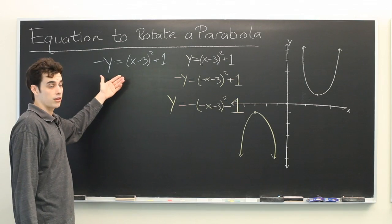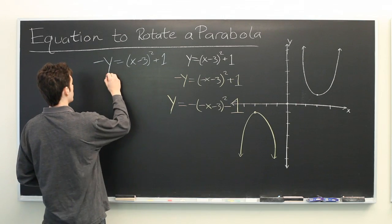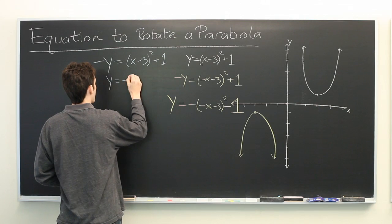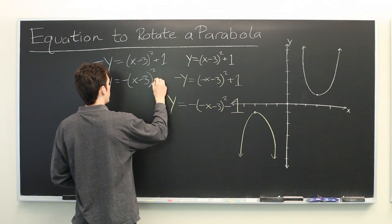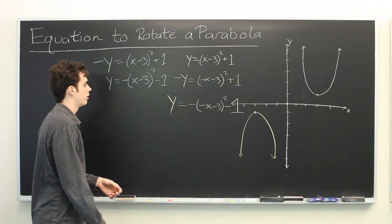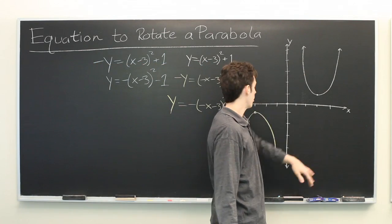And again, we can simplify this by dividing by negative 1 on both sides: y equals negative (x minus 3) squared minus 1. Then we are just flipping it over.